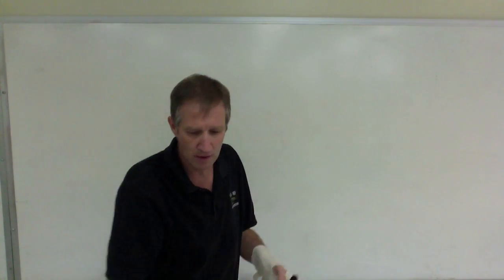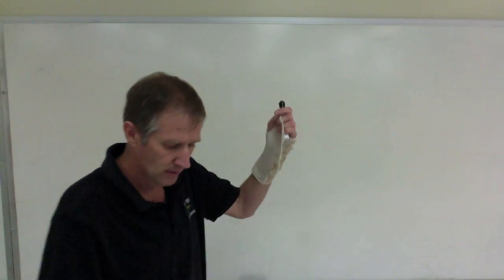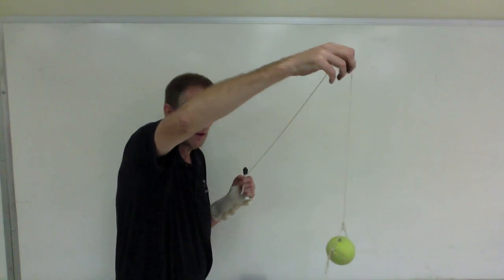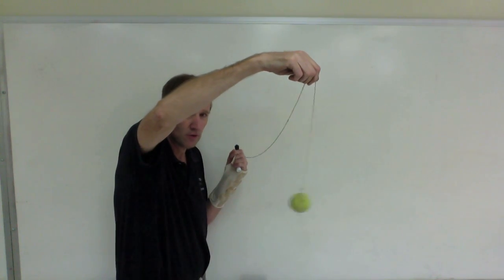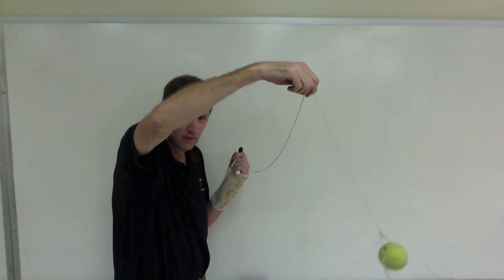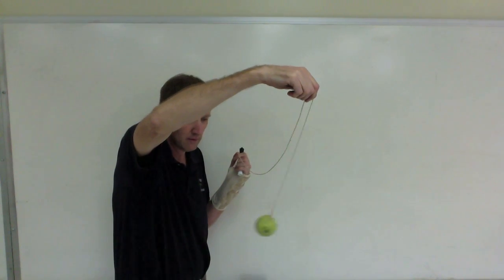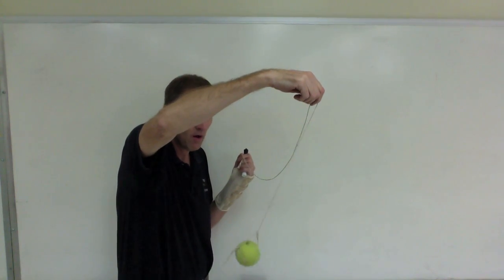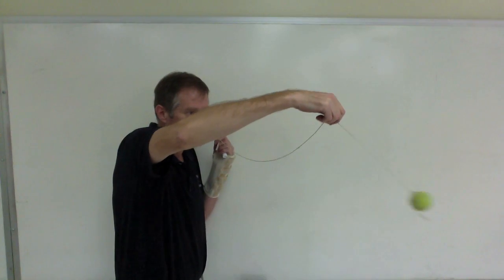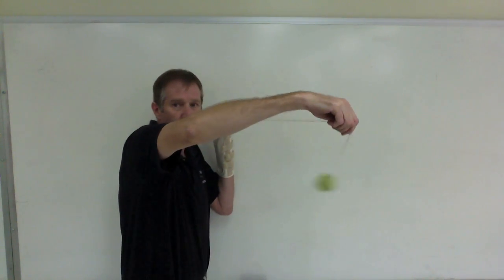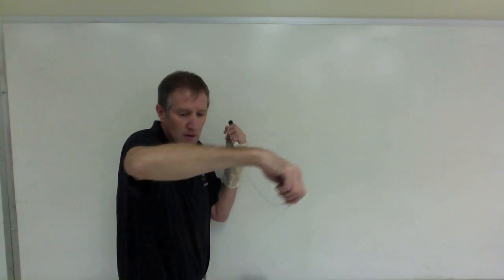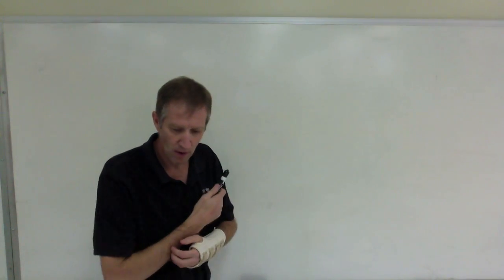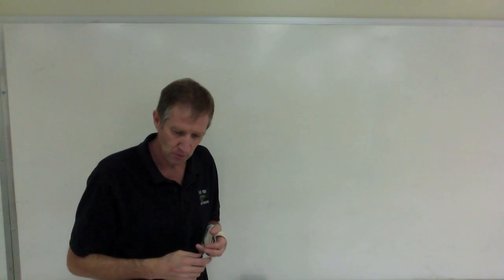The goal of conical pendulum questions is to relate the speed to the vertical angle — the angle that the string makes measured to the vertical. If it's going slow the angle is quite small, but the faster it goes, the ball swings out and makes a greater and greater angle. The goal is to find the relationship between the speed of the ball and the angle it makes, and then put in some numbers to solve for that.